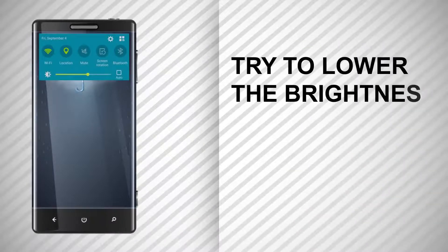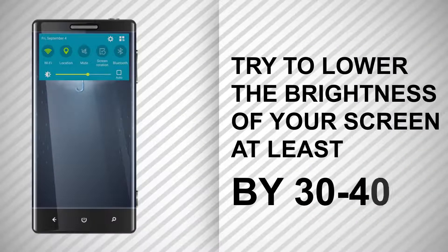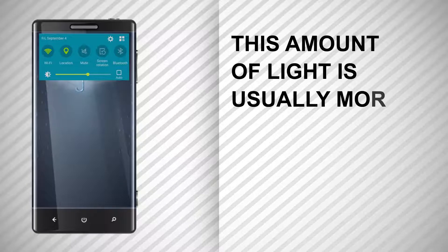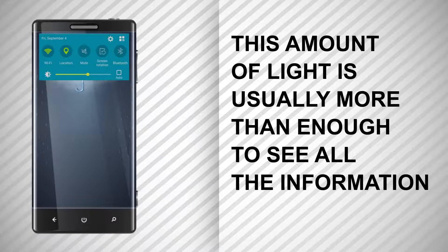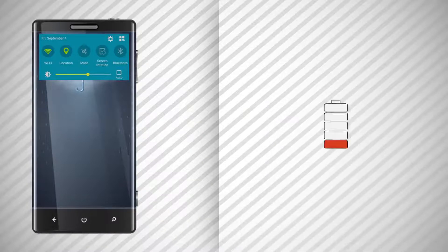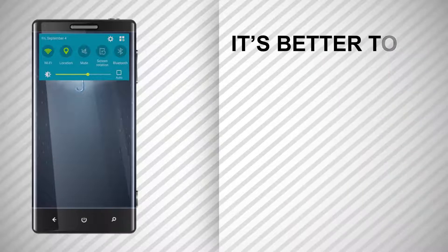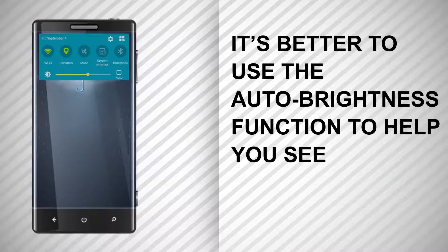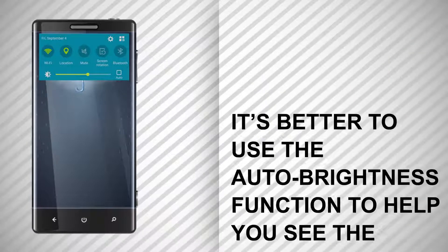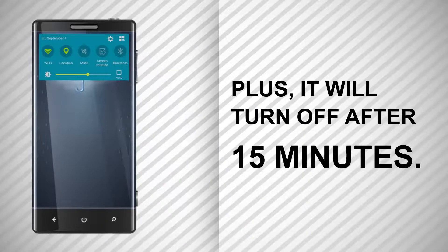Also, try to lower the brightness of your screen at least by 30 to 40%. This amount of light is usually more than enough to see all the information on the display. Moreover, it will help to extend the life of your battery dramatically. When outside, don't use the max brightness level either. It's better to use the auto brightness function to help you see the phone screen even in the sun. Plus, it will turn off after 15 minutes.